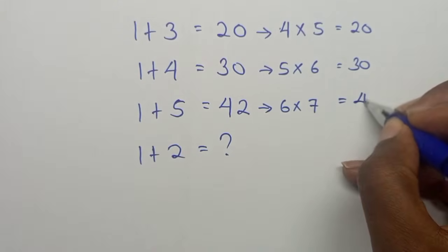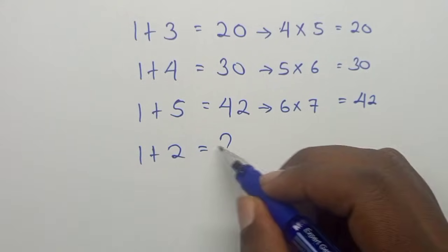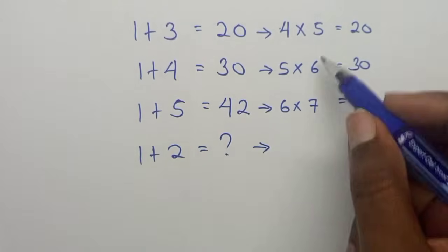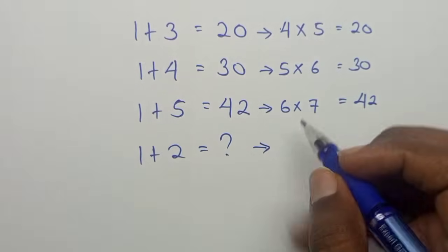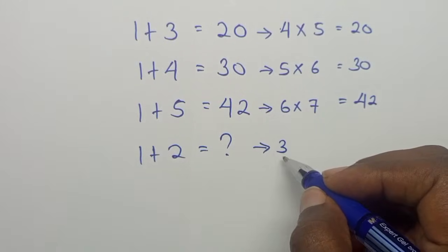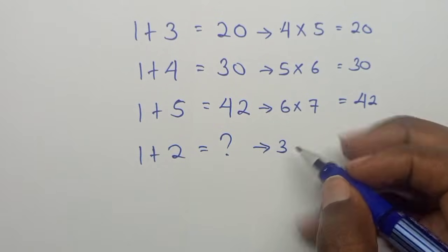That implies that to get the value of 1 plus 2, we shall follow the same sequence, the order of the sequence. So here, 1 plus 2 is 3, so we shall multiply 3 by its successor,